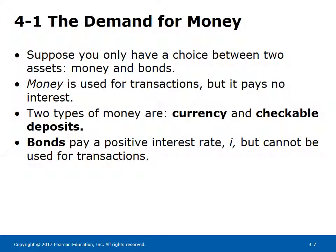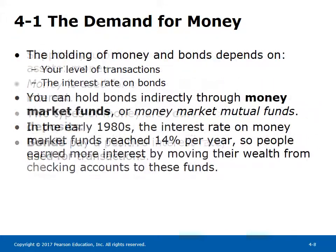Demand for Money: suppose you only have a choice between two assets — money and bonds. Money is used for transactions but pays no interest. Two types of money are currency and checkable deposits. Bonds pay a positive interest rate but cannot be used for transactions. The holding of money and bonds depends on your level of transactions and the interest rate on bonds. You can hold bonds indirectly through money market funds.